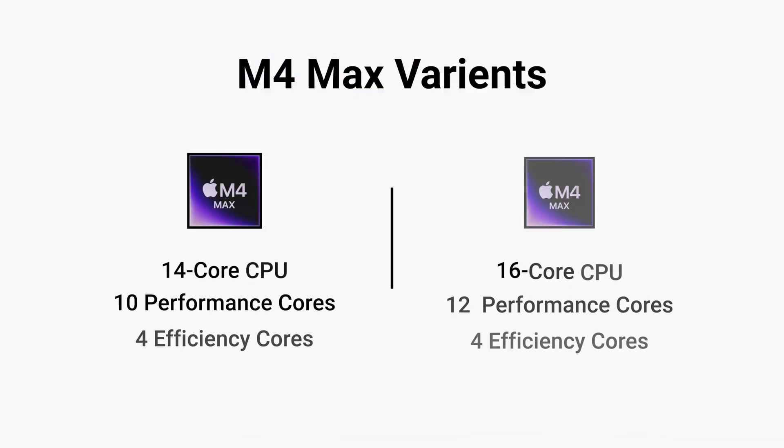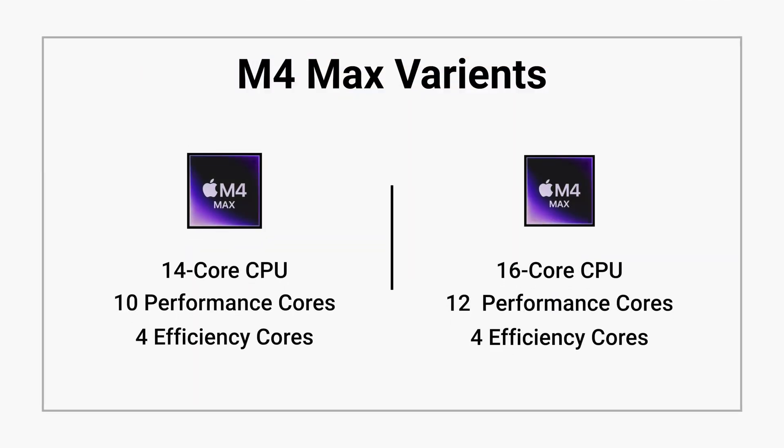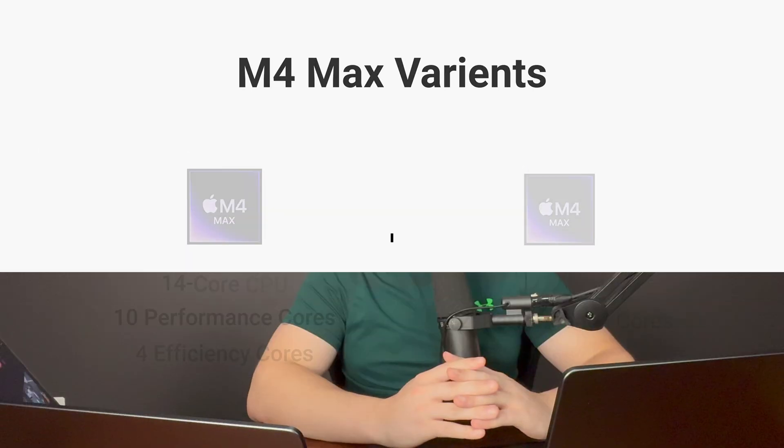For our core breakdown: the M4 Max 14-core has 10 performance cores and 4 efficiency cores, while the 16-core has 12 performance cores and 4 efficiency cores. So you're getting two extra performance cores in the 16-core variant.